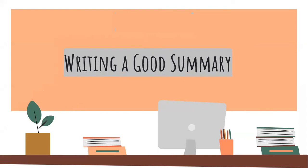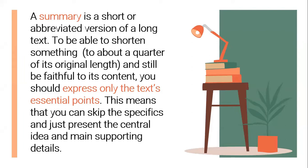Writing a good summary. A summary is a short or abbreviated version of a long text. To be able to shorten something to about a quarter of its original length and still be faithful to its content, you should express only the text's essential points. This means that you can skip the specifics and just present the central idea and main supporting details. A summary is a comprehensive and concise form of a text.